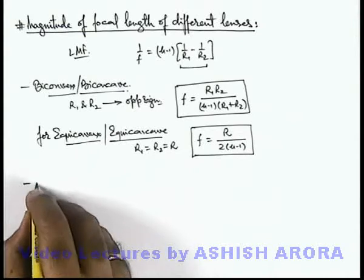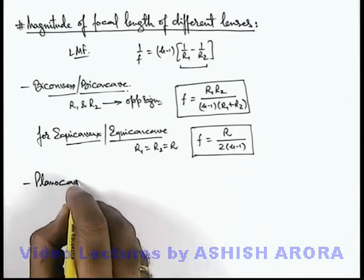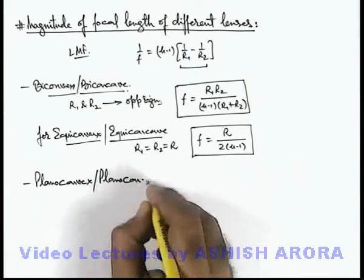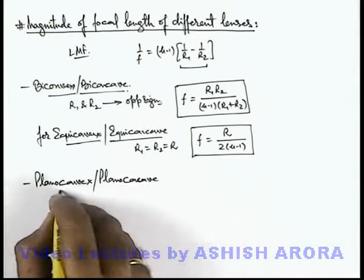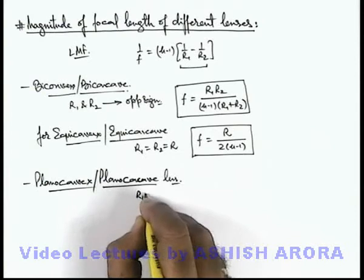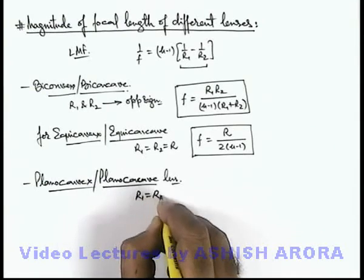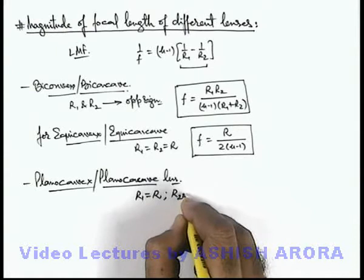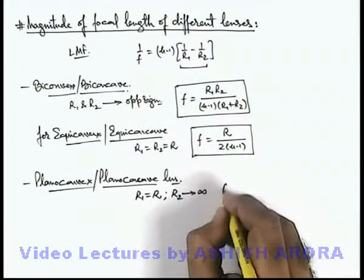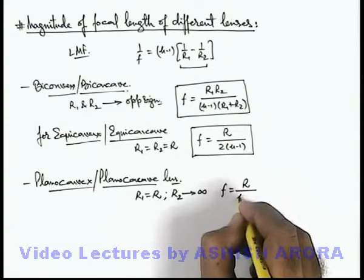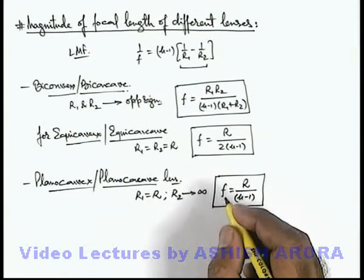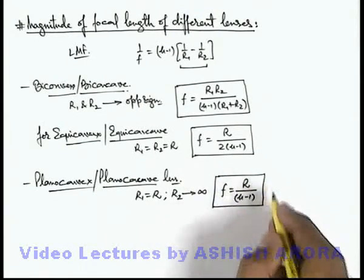Now if we talk about plano-convex or plano-concave lens, in this situation we know that one radius of curvature can be taken as R, and the other radius of curvature R₂ will tend to infinity. From this expression, directly we can write the focal length can be given as f = R/(μ-1), whether it is plano-convex or plano-concave. The magnitude can be directly given by this expression.